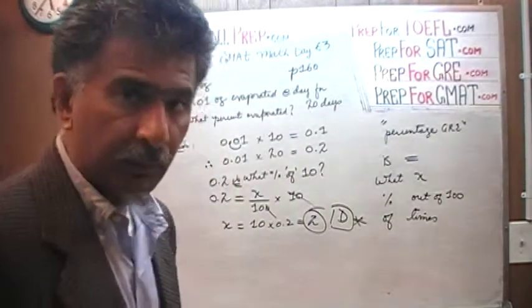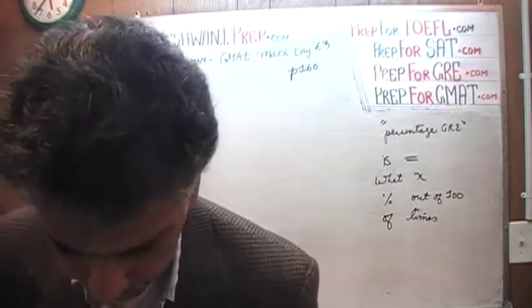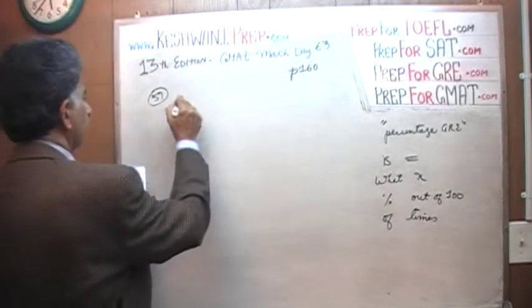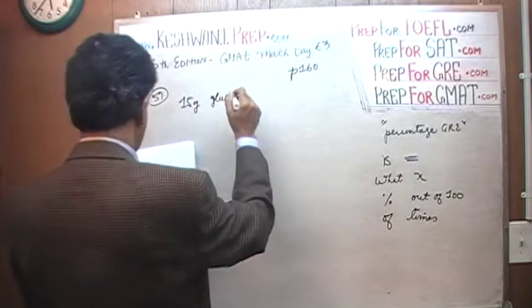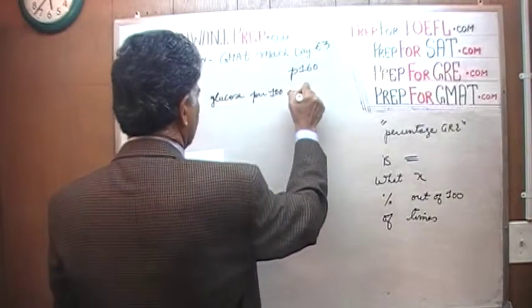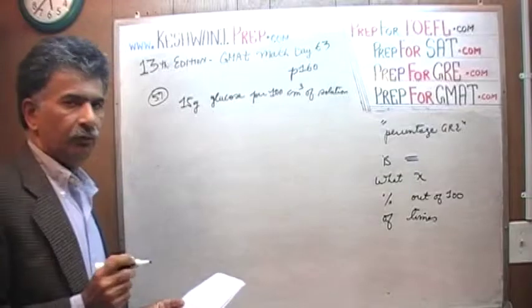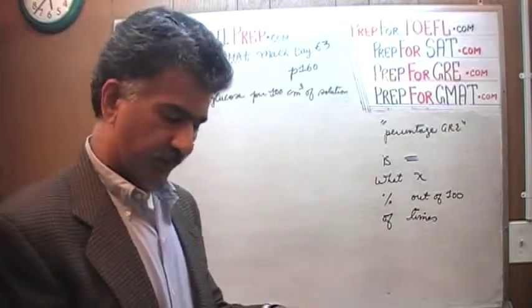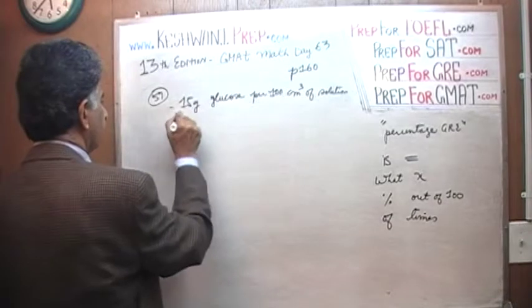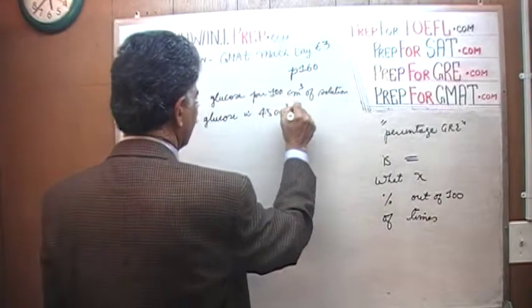Let's do the next one, shall we? The next one about the glucose, number 59. So here we have 15 grams of glucose per 100 cubic centimeters of solution. Thus we are told that the solution is of such a nature that every 100 cubic centimeters contains 15 grams of glucose. And the question is very straightforward: how much glucose in 45 cubic centimeters of solution?